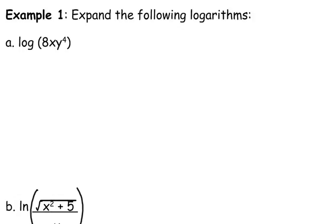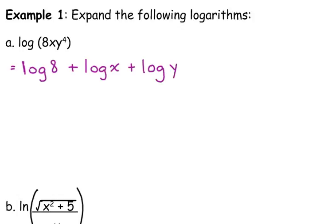The product rule says that if I'm multiplying things inside of a logarithm, I can expand that to be the sum of individual logarithms. So I have the log of 8 plus the log of x plus the log of y to the 4th.